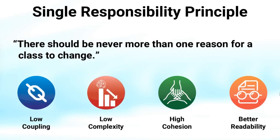It is much more difficult to understand and edit a class when it has various responsibilities. So if we have more than one reason to change, the functionality will be split into two classes and each will handle its own responsibility. When a class has more than a single responsibility, those responsibilities become coupled, and this coupling can lead to a fragile codebase that is difficult to refactor when your requirements emerge.